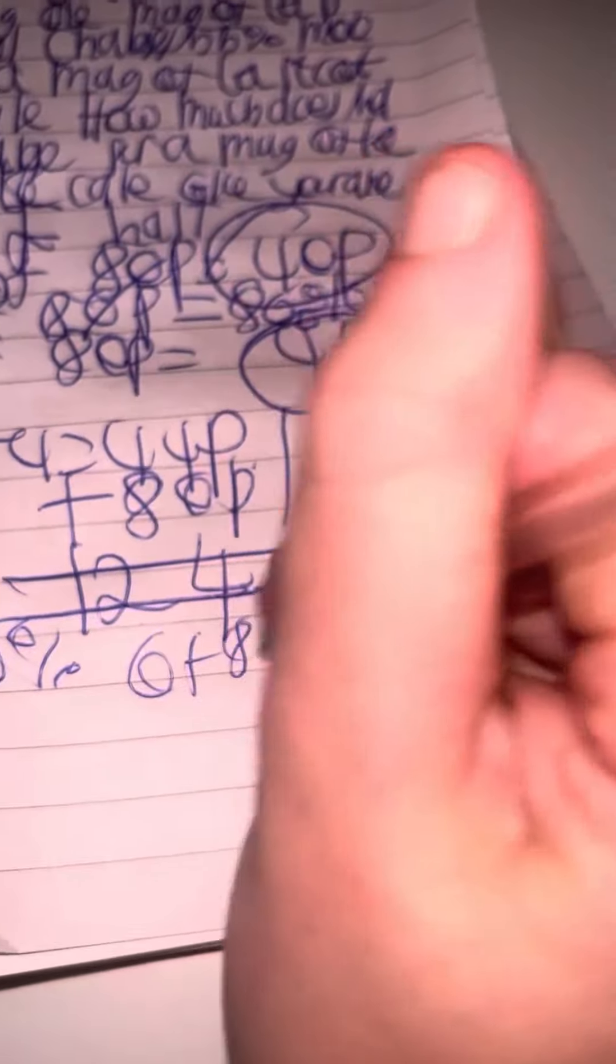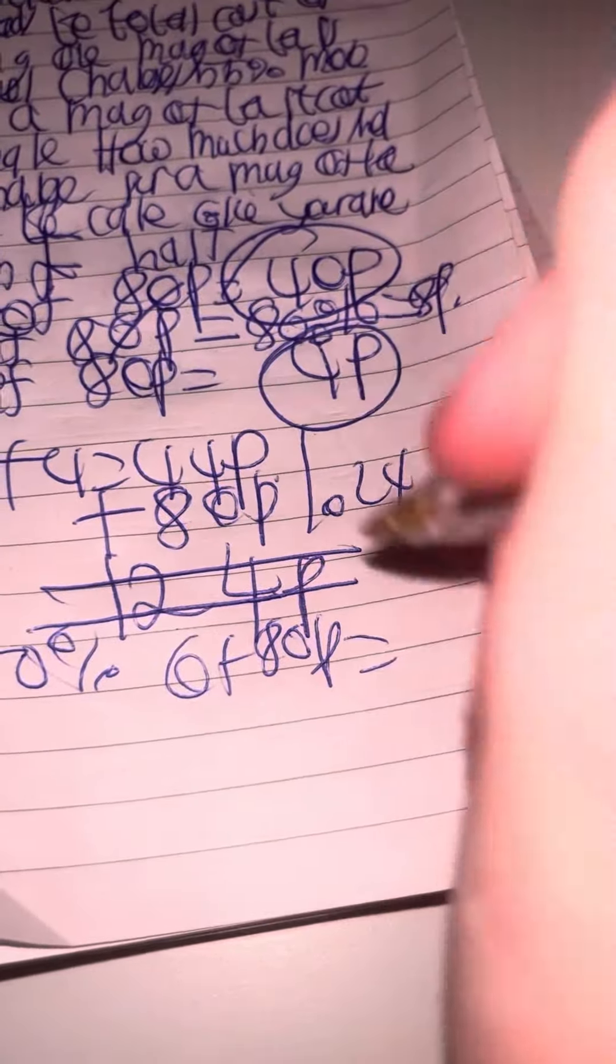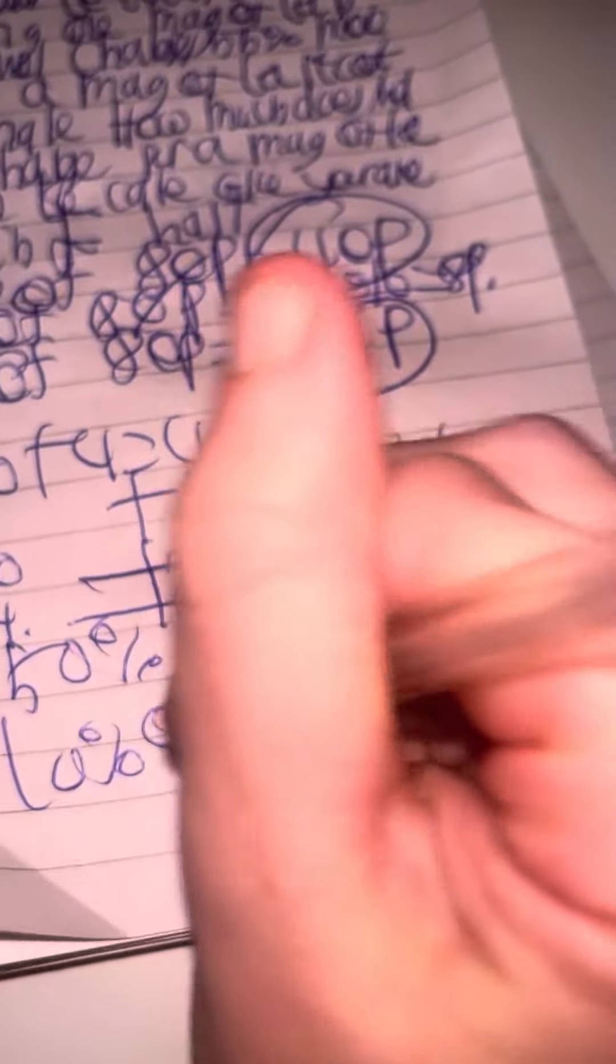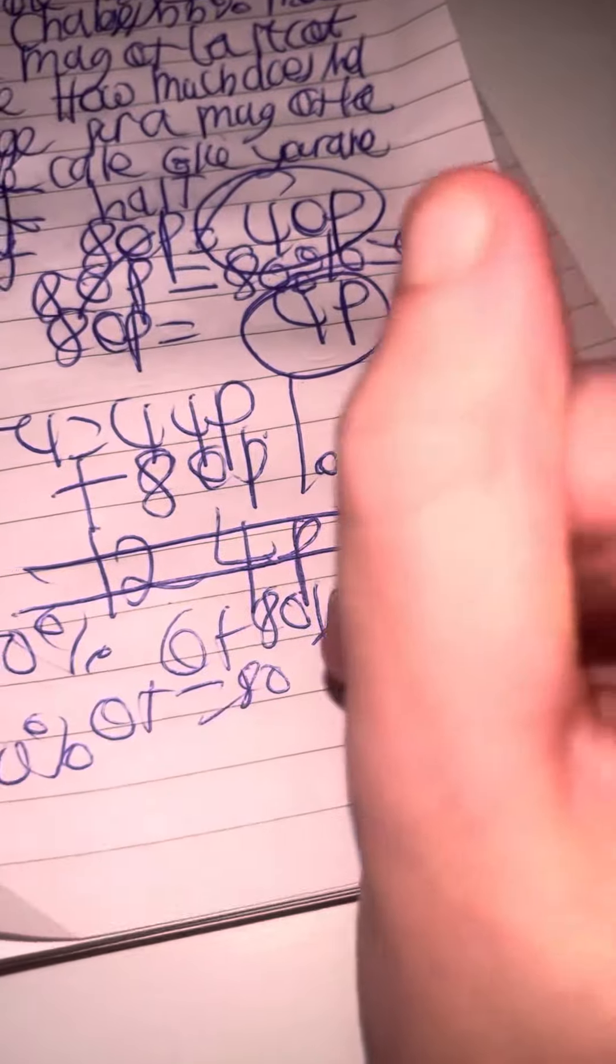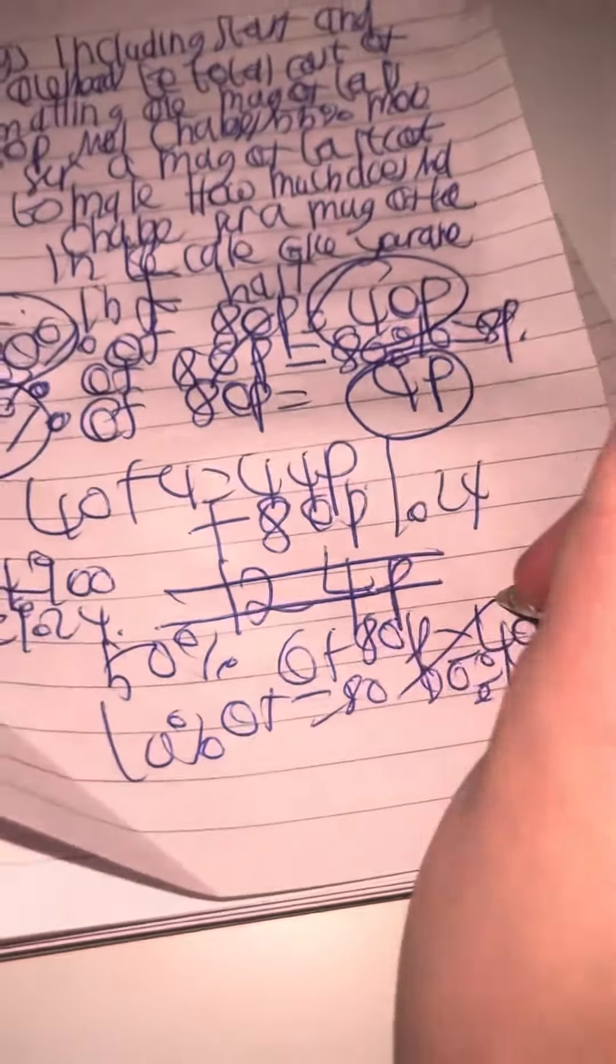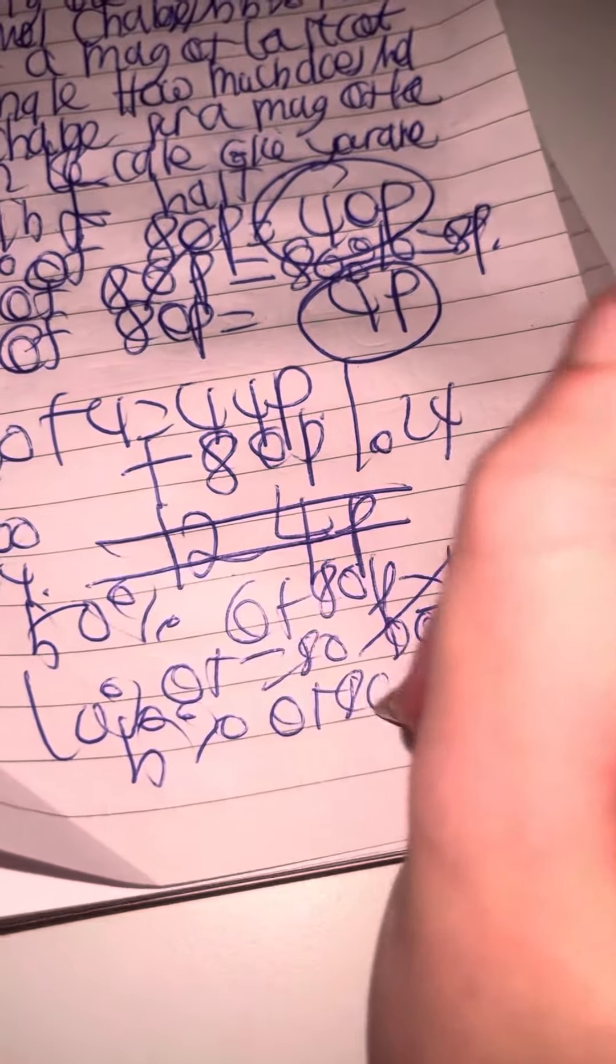So we've got to do the percentage method. 55% of 80. So 50% is going to be 40, then if you do 10%, you're technically doing 80 divided by 10 equals 8, because when you divide by 10 you just knock off a zero. So 5% of 80 is 4p.